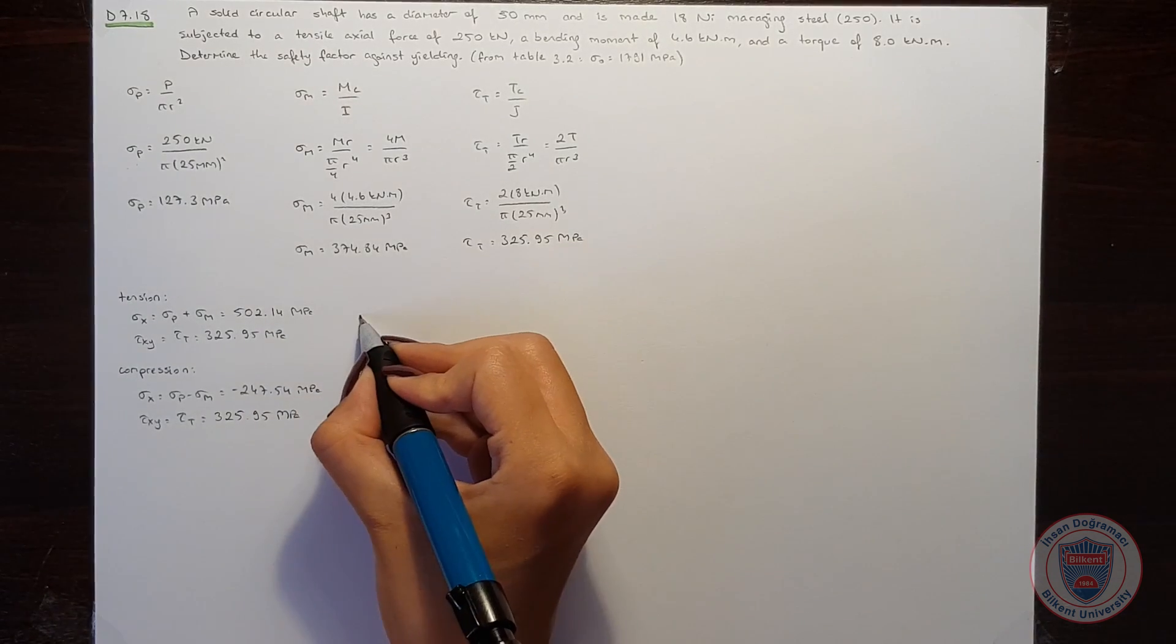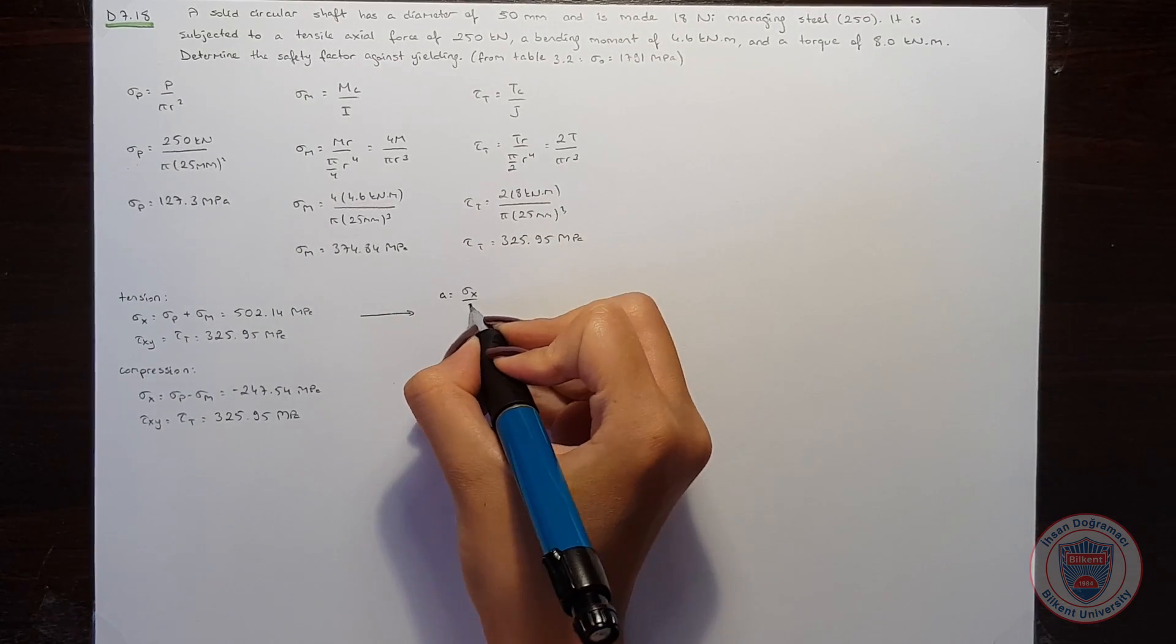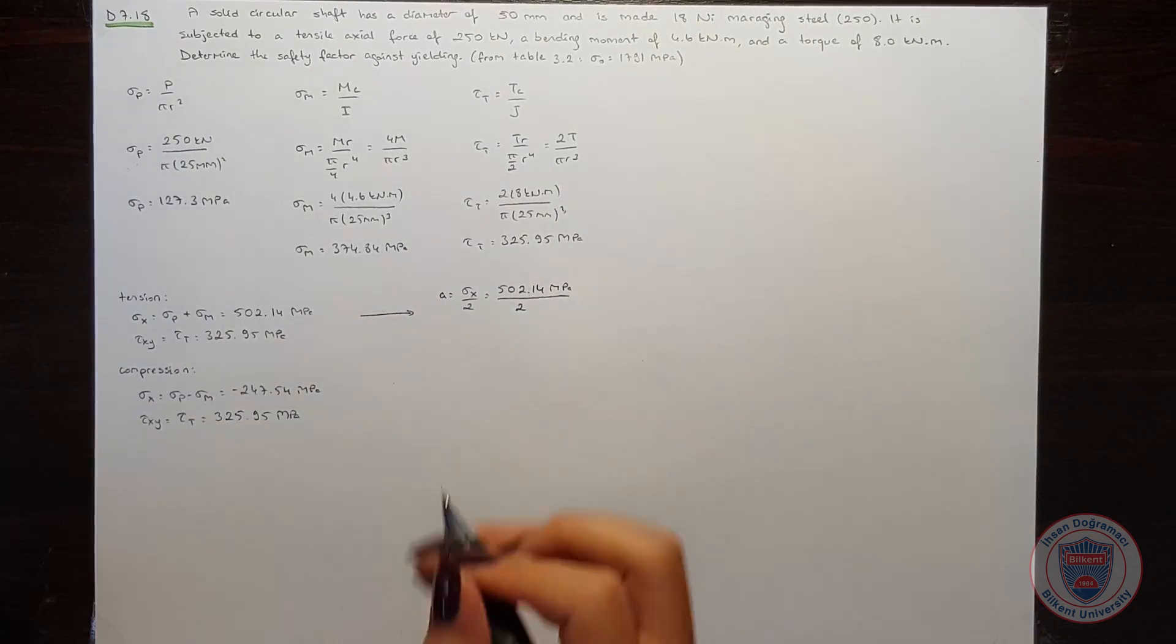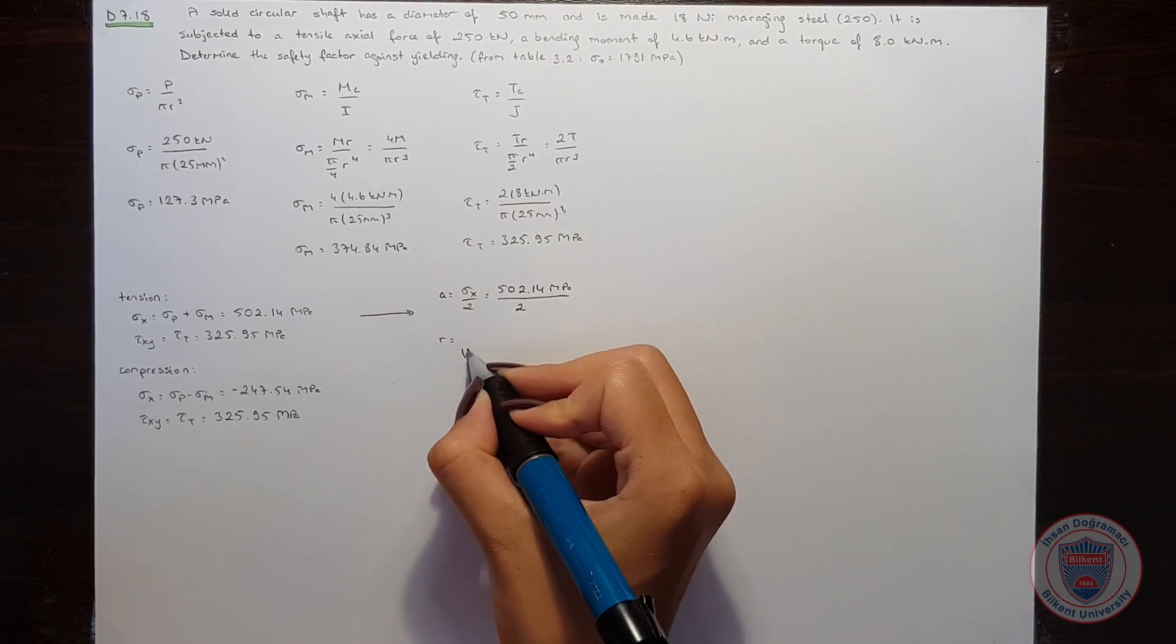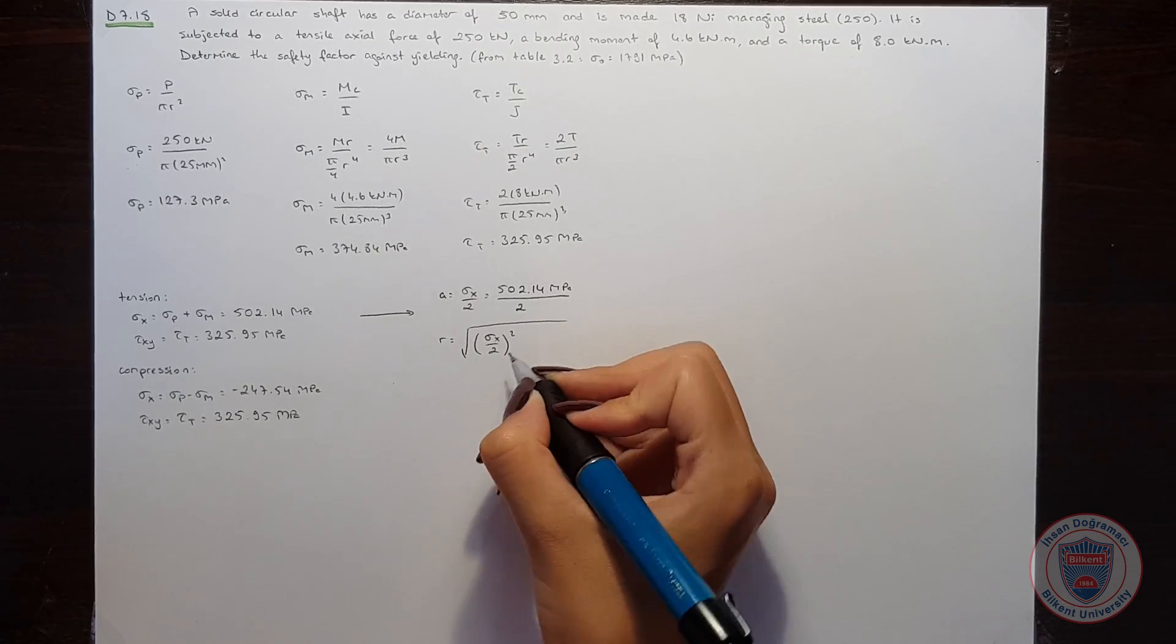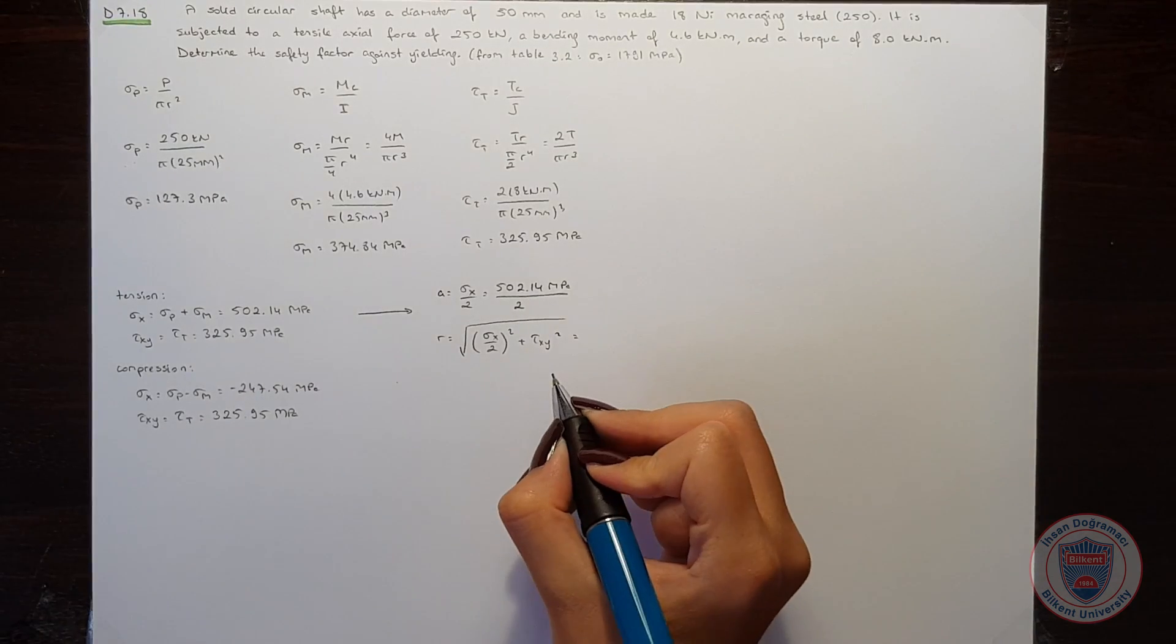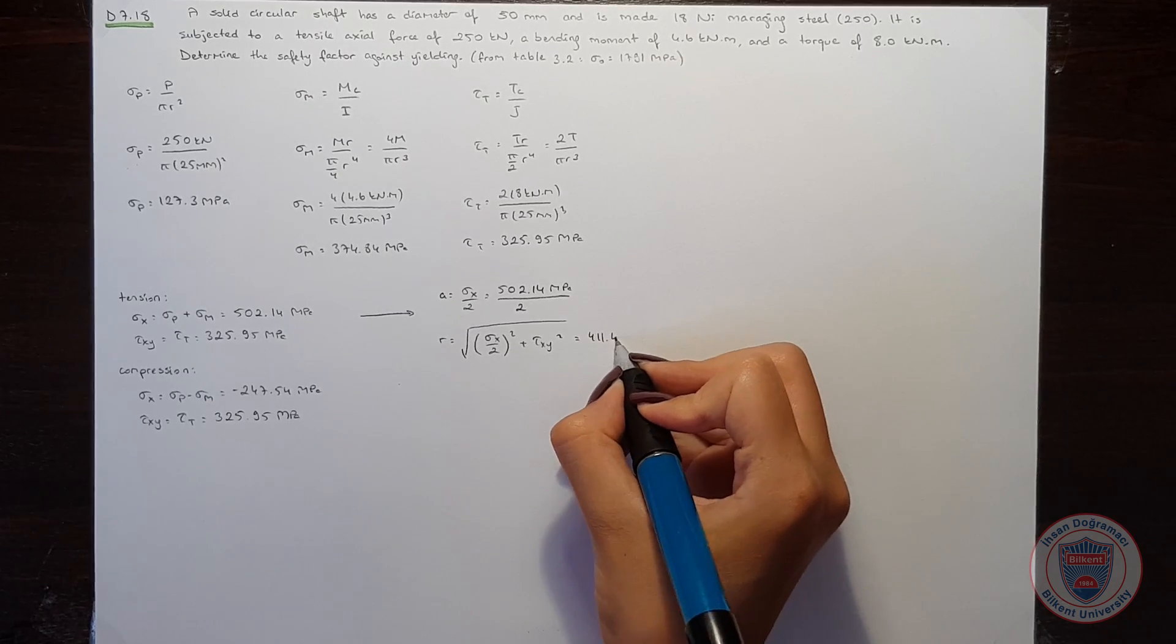When we consider the tension case, our a will be sigma x over 2, which is 502.14 MPa over 2. And our r will be sigma x over 2 square plus tau xy square. And it will be 411.4.